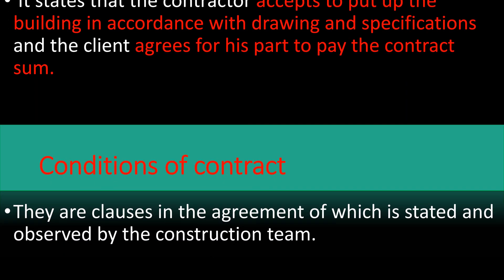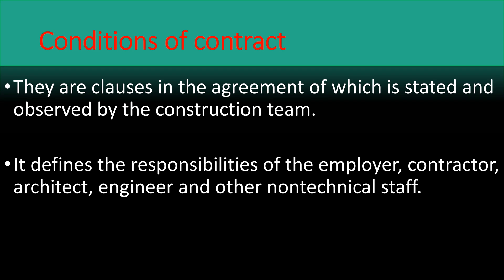The last document is the conditions of contract. They are clauses in the agreement which are stated and observed by the construction team. It defines the responsibility of the employer, contractor, architect, engineer, and other technical staff. Whenever a contract is entered, these conditions of contract show the rules for everyone, so as to avoid people overstepping their roles.